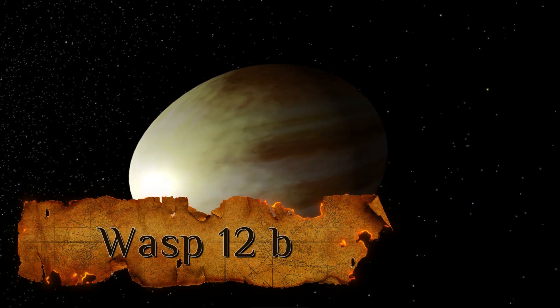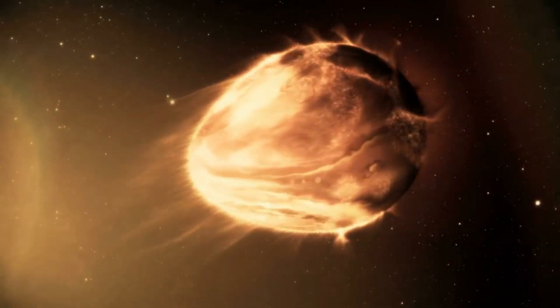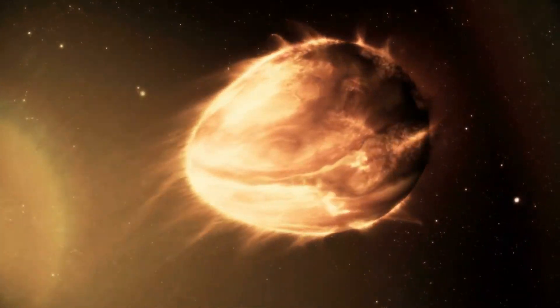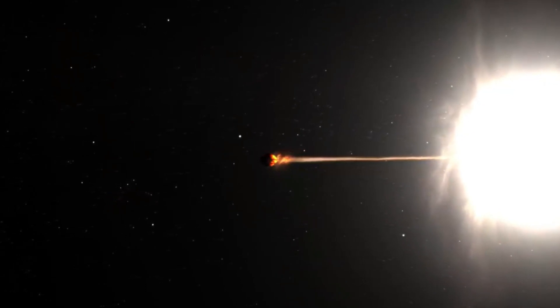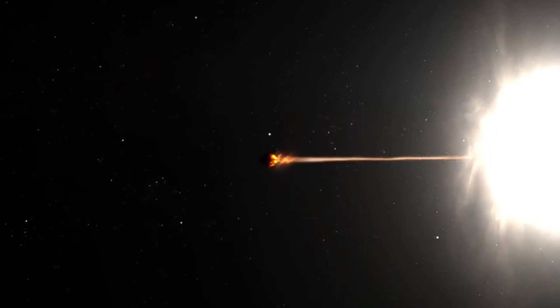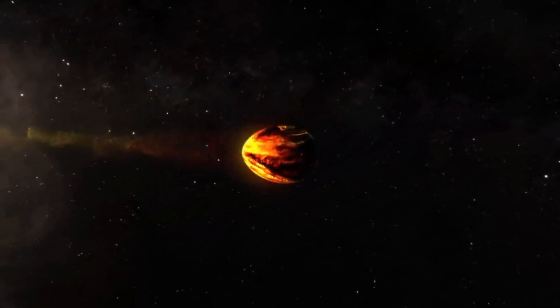Number 2: WASP-12b. This world is getting eaten by its sun, which is making it look like an egg. It is, in fact, a world about the size of 1.8 Jupiters that takes 1.1 days to orbit the sun. It really is a very scary world with no hope.